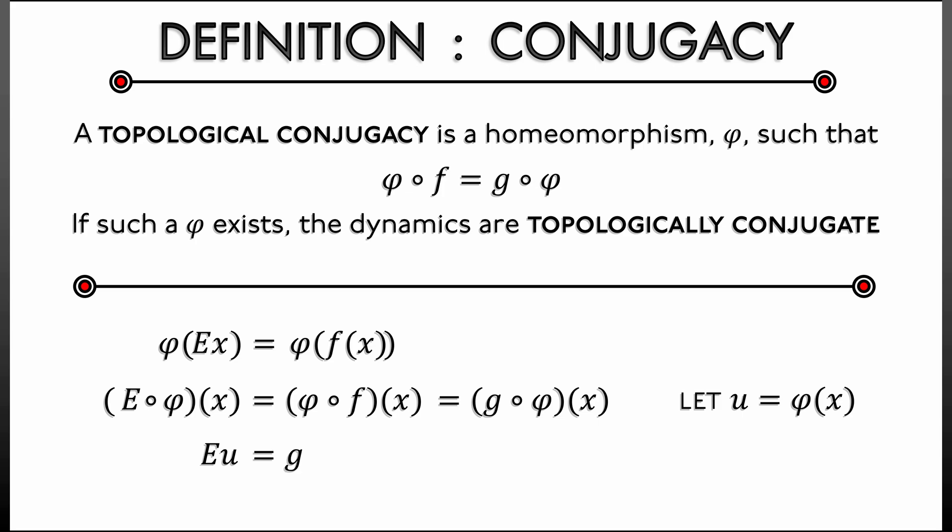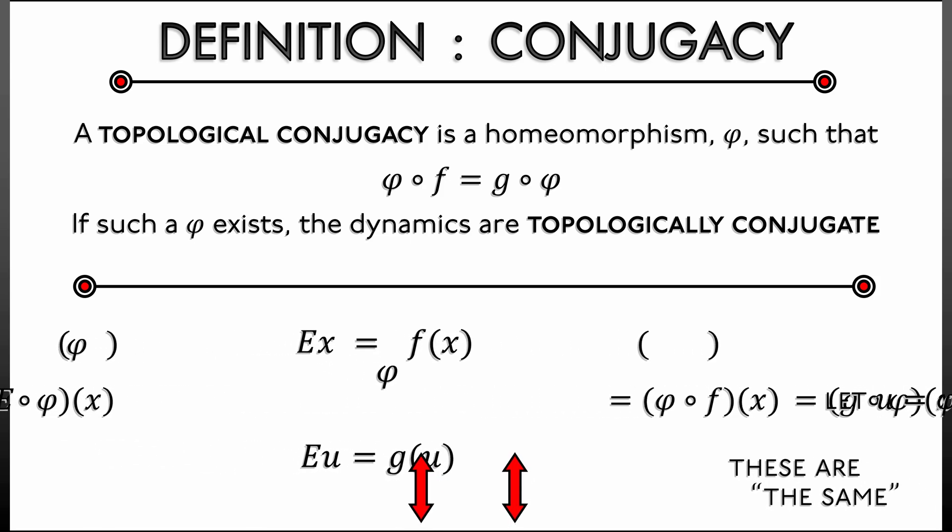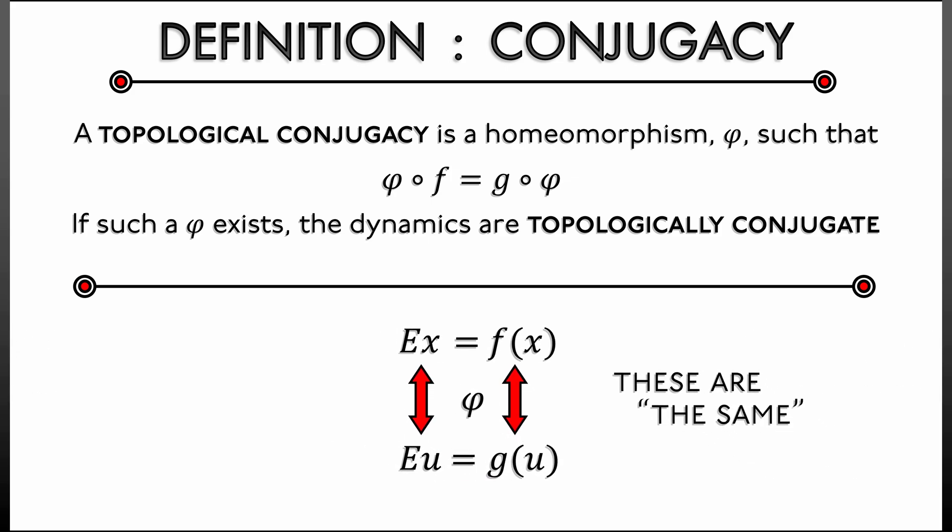On the right, g ∘ φ(x) = g(u). So in the end what we have is that Ė x = f(x) got converted to Ė u = g(u), this conversion happening by this homeomorphism φ.